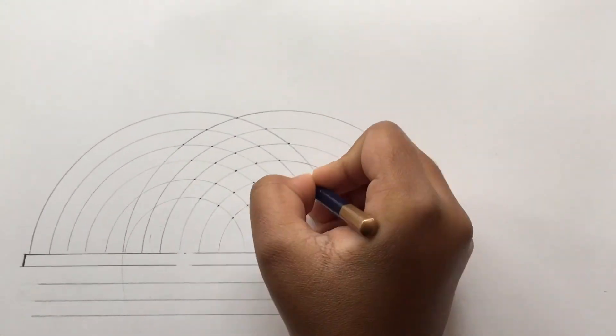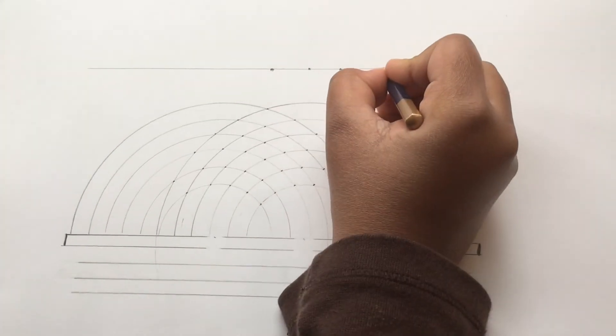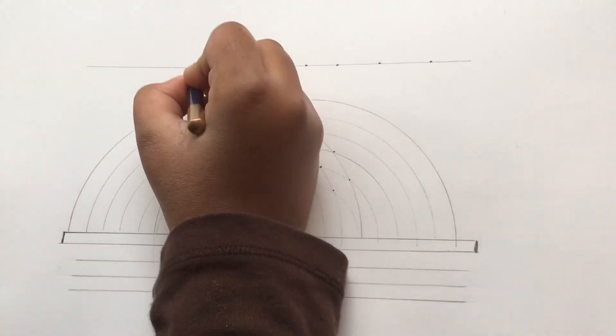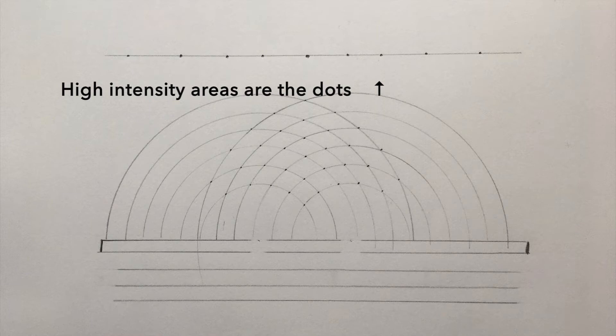In this diagram you can clearly see how the high intensity regions are forming. In this diagram the dots show the areas where most of the light can be seen, and these are the high intensity areas.